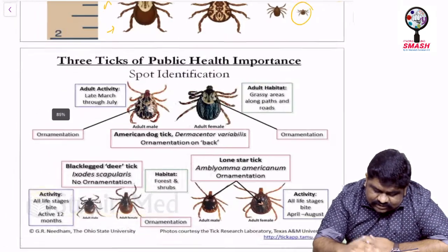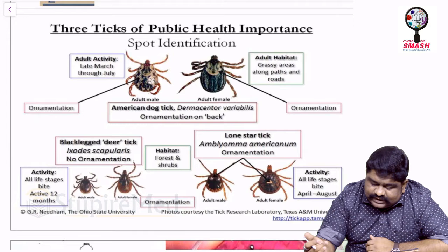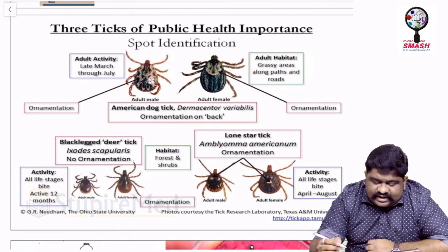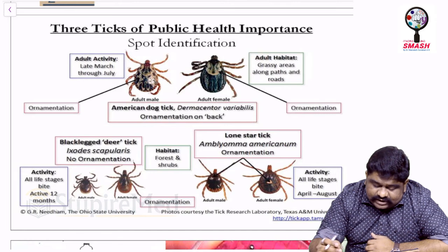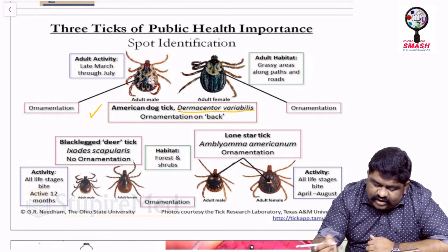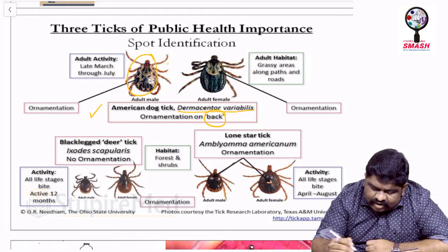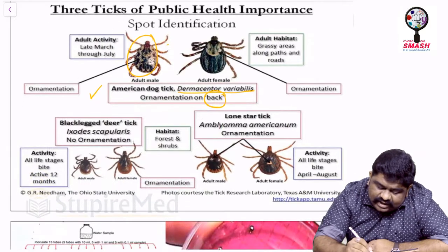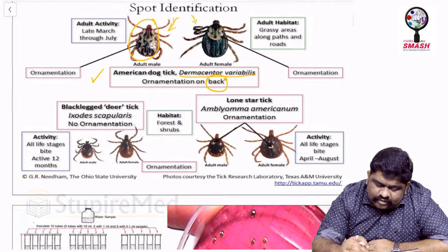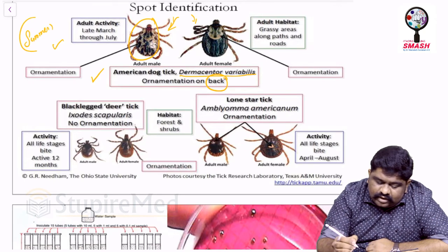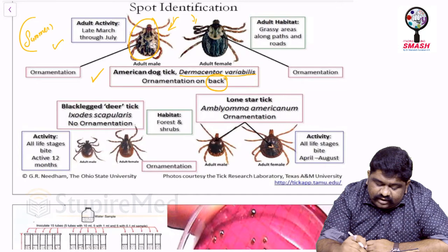Do not make silly mistakes in your exams. The American dog tick, Dermacentor variabilis, shows ornamentation on the back. Adults are active between March to July — generally in summer. Remember: the American dog tick shows its activity in summer.